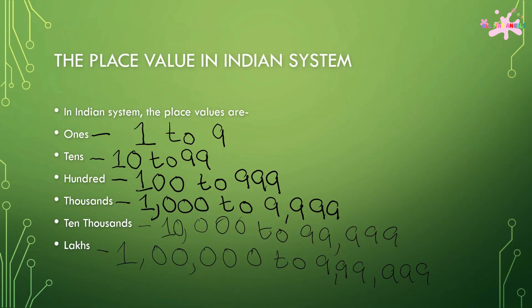The place values in the Indian system. In the Indian system, the place values are: ones, which is from 1 to 9; tens, which is from 10 to 99; hundreds, which is from 100 to 999; thousands, which is from 1,000 to 9,999; and ten-thousands, which is from 10,000 to 99,999.